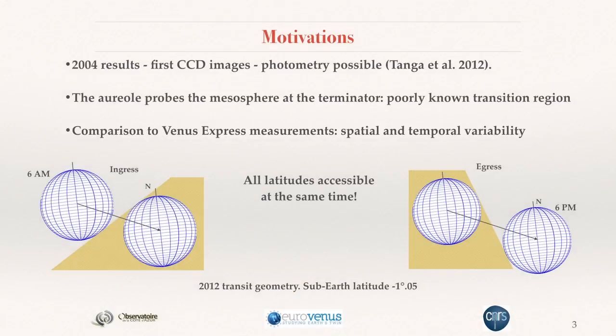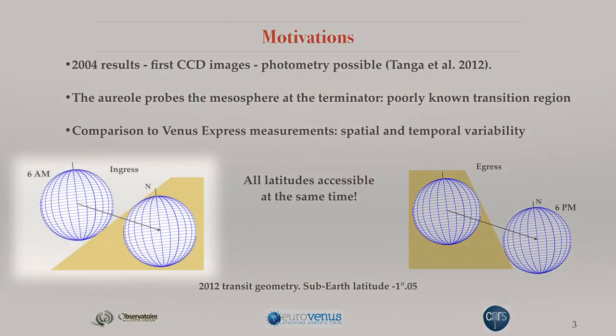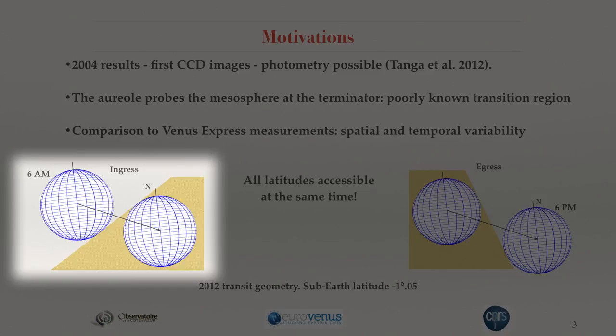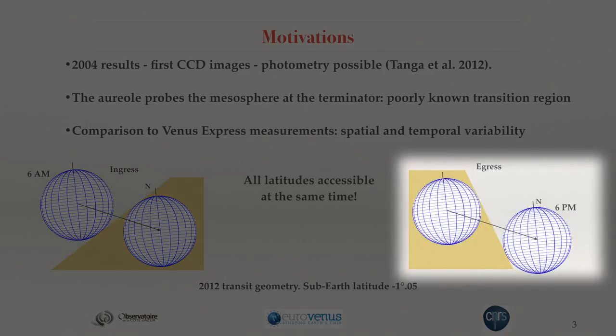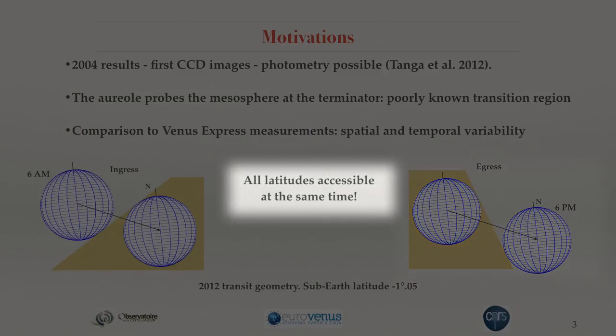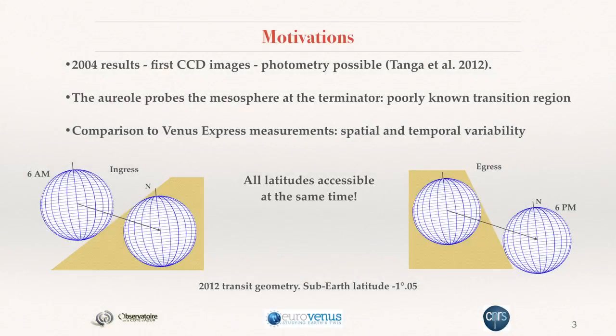The interest of performing this exercise is that when considering the aural along the limb at ingress or egress, we are exploring basically all the latitudes at the same time in an interval of just a few hours — the duration of the transit in front of the solar disk. So we can get a snapshot of the atmosphere at all latitudes at the same time.